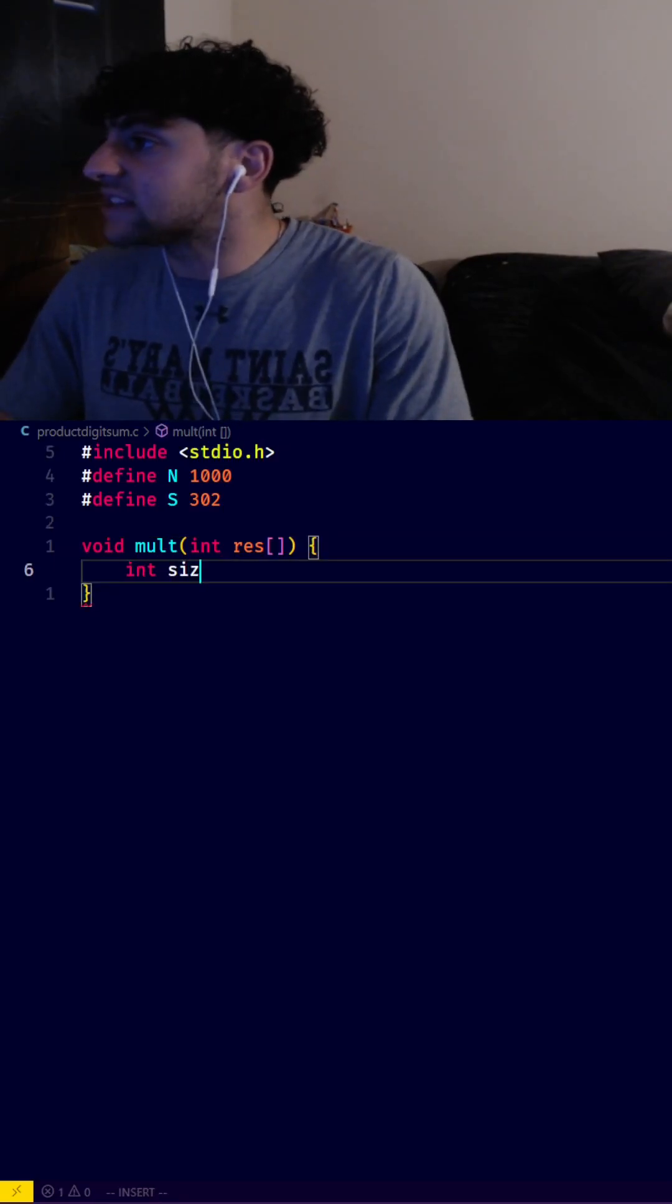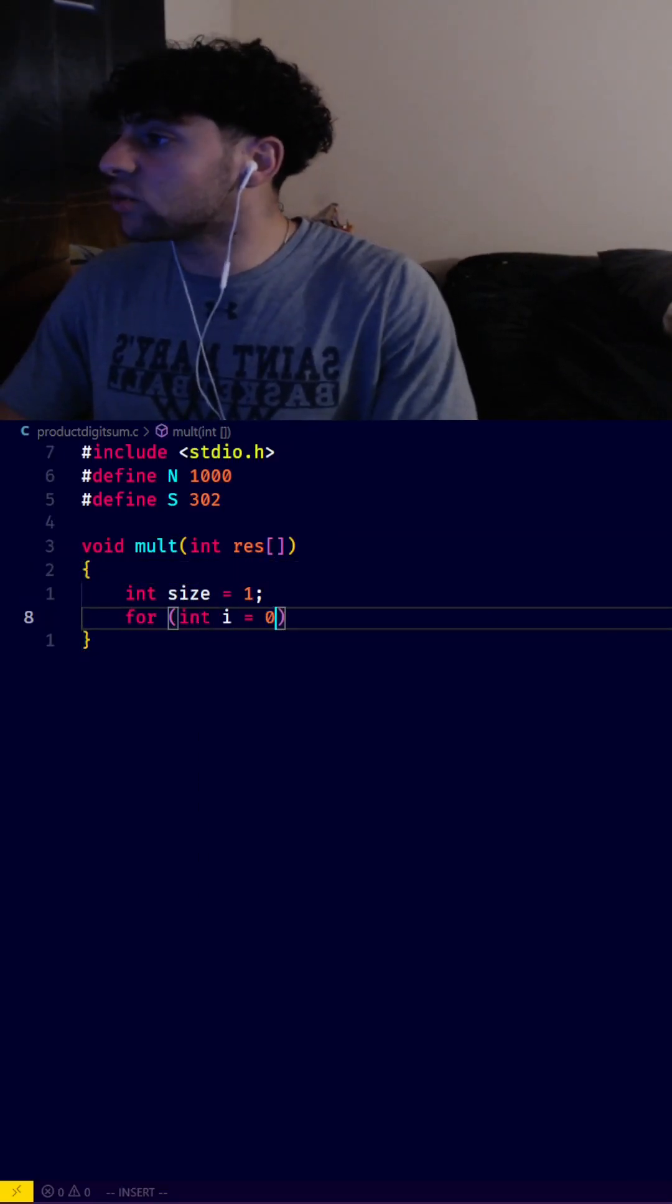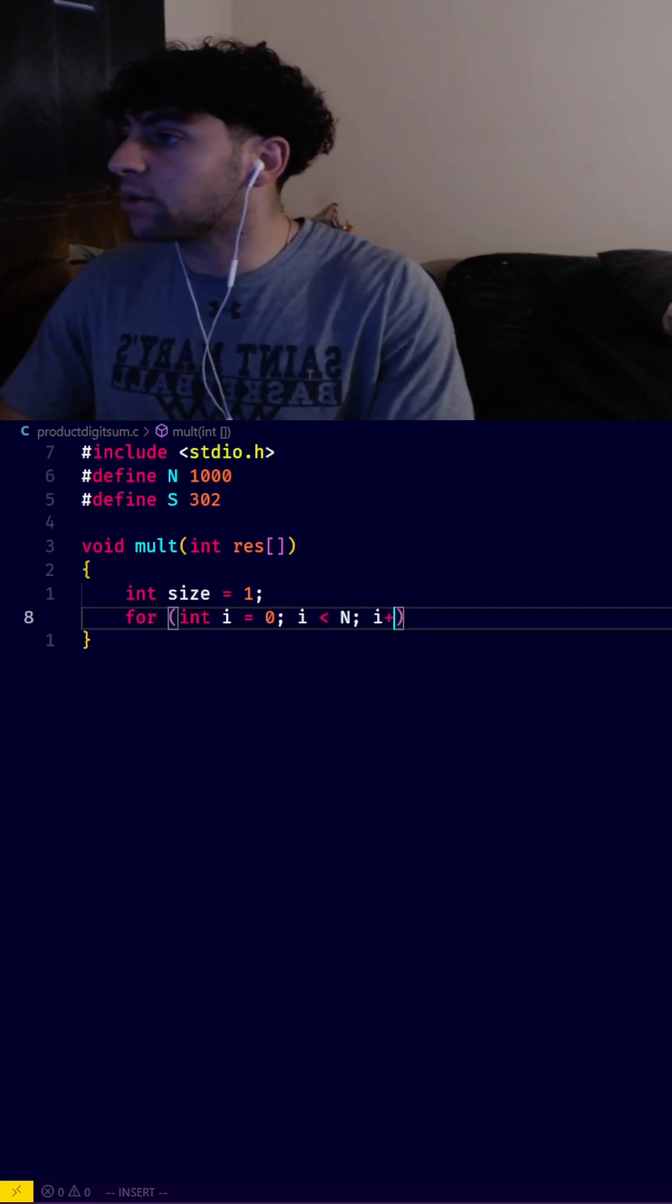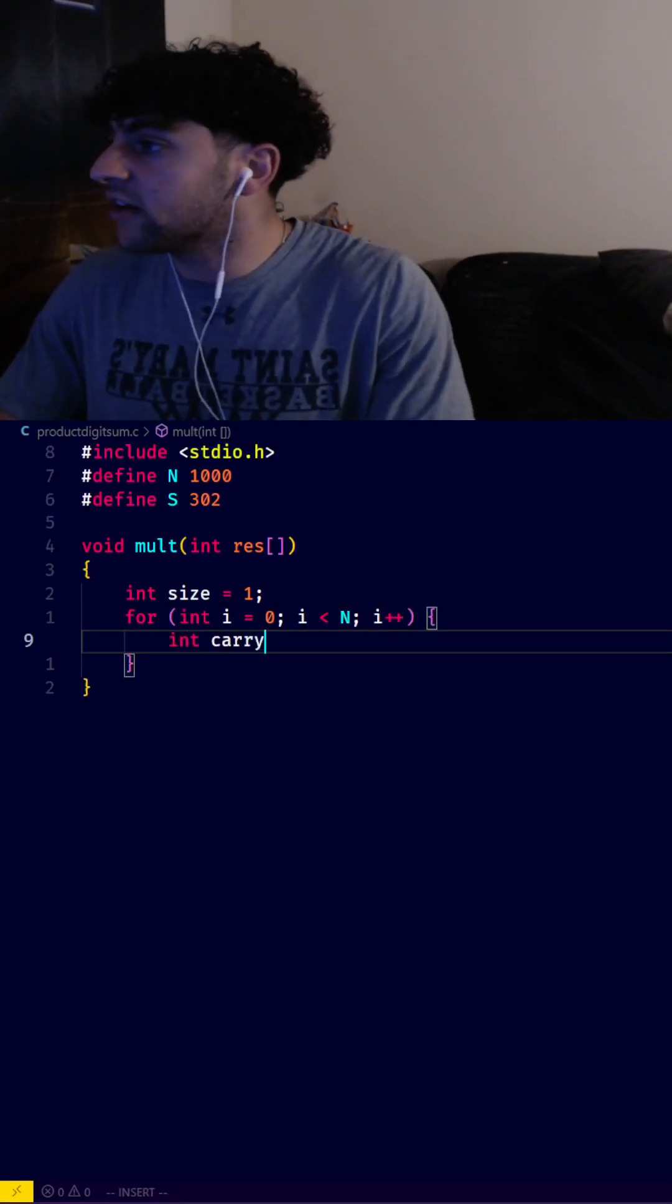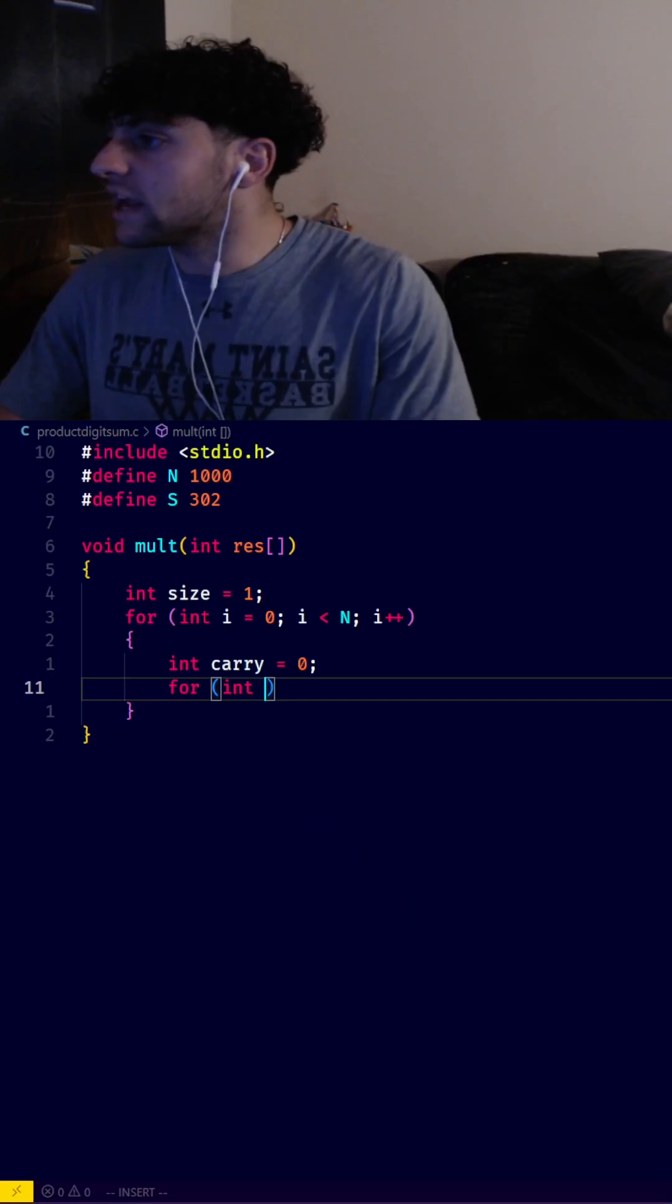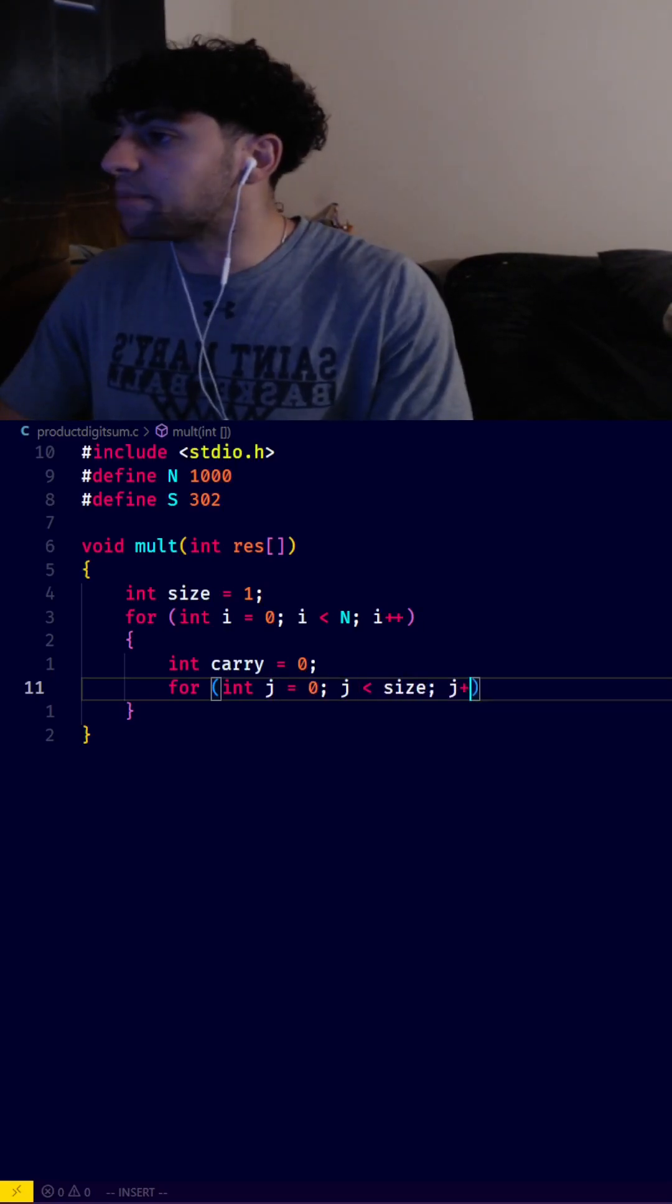We need a variable int size set to 1. Then we write for (int i = 0; i < n; i++). Inside, we need int carry = 0. Then for (int j = 0; j < size; j++).